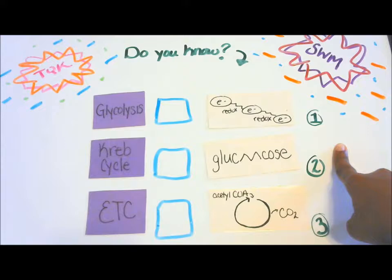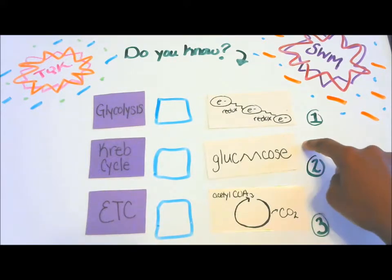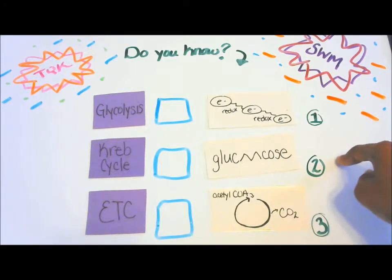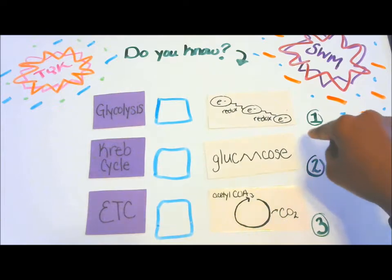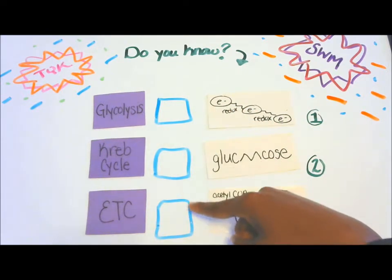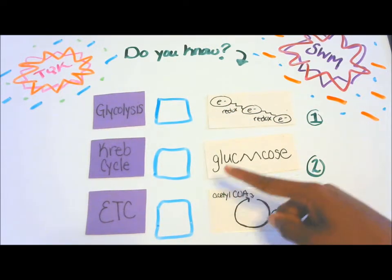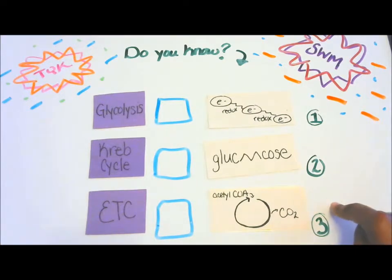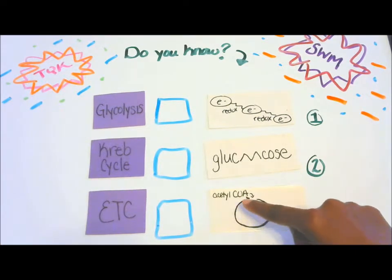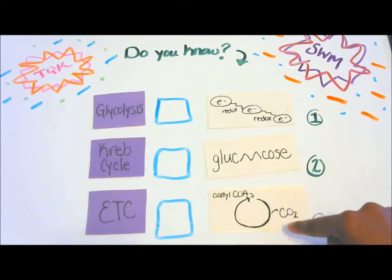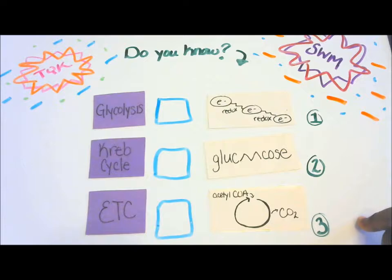Number two: it is the oxidation of glucose to give us pyruvic acid, a couple ATPs, and NADHs. Put number two in one of these three boxes. Number three: the oxidation of acetyl-CoA giving us carbon dioxide, ATP, NADH, and FADH2 — our reduced electron carriers.